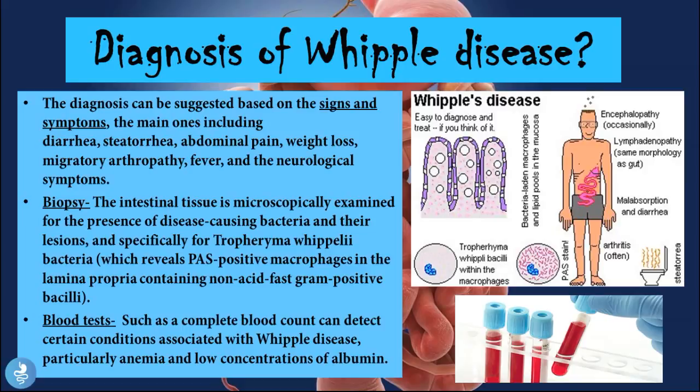Blood tests such as a complete blood count can detect certain conditions associated with Whipple disease, particularly anemia and low concentrations of albumin. Albumin is a protein, and because these patients have hypoproteinemia — their intestines are unable to absorb proteins — we will see low levels of albumin. There will also be anemia because patients cannot absorb iron, vitamin B12, and folic acid.